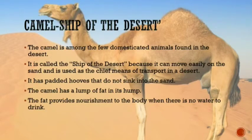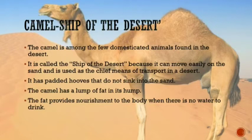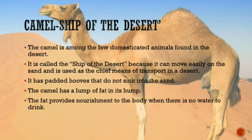At the sea beach it is always full of sand, and when we put our leg, it goes inside. But the camel is the only animal that has special hooves which help it walk smoothly on the sand. The camel also has a lump of fat in its hump. This fat provides nourishment to the body when there is no water to drink.